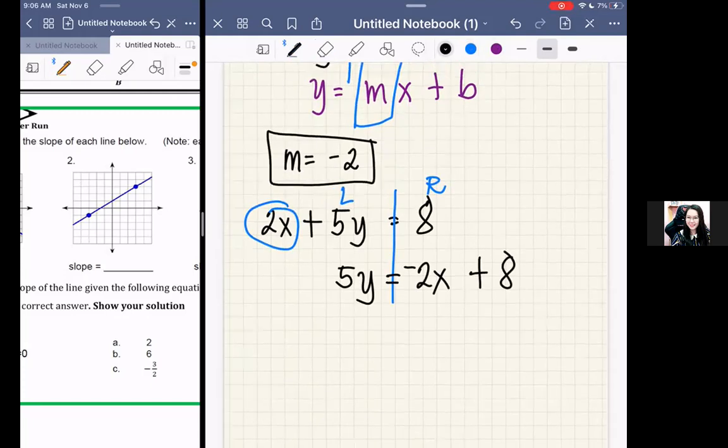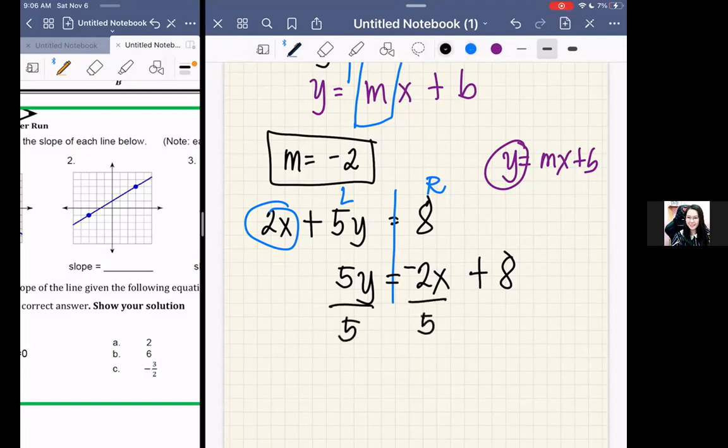How does it lose its coefficient? We divide this by 5. Everything. So now 5 will cancel, leaving y. This becomes negative 2 over 5 x plus 8 over 5.